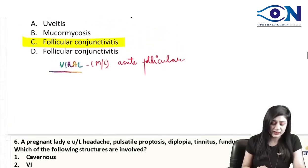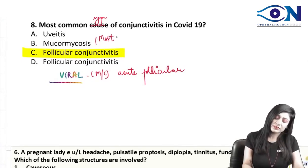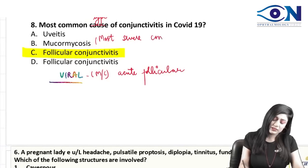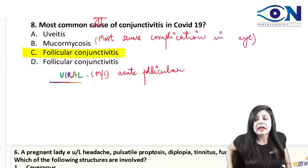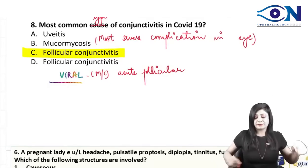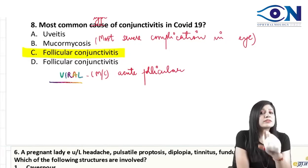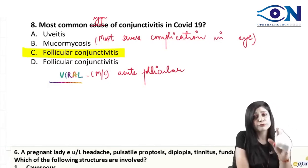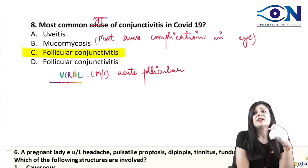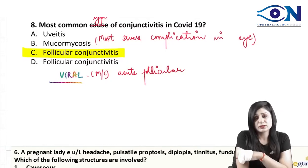There is always a difference between most common and most severe. The most severe complication of COVID-19 in the eye is not acute follicular conjunctivitis. A very common dictum is that most common and most severe are never the same. So if they ask the most severe complication of coronavirus in the eye, it is orbital mucormycosis.